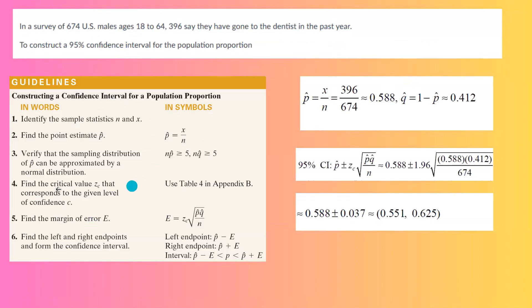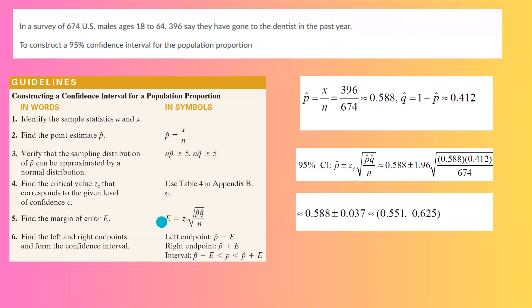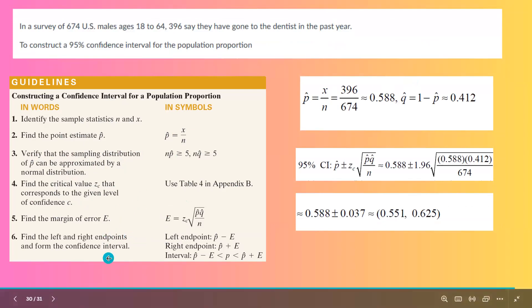Remember the steps that we need to take. First, we need to find the point estimate p-hat, then we need to verify that this is actually a normal distribution, finding the critical values using a table or calculator, find the margin of error following the formula, and then finding the endpoints.